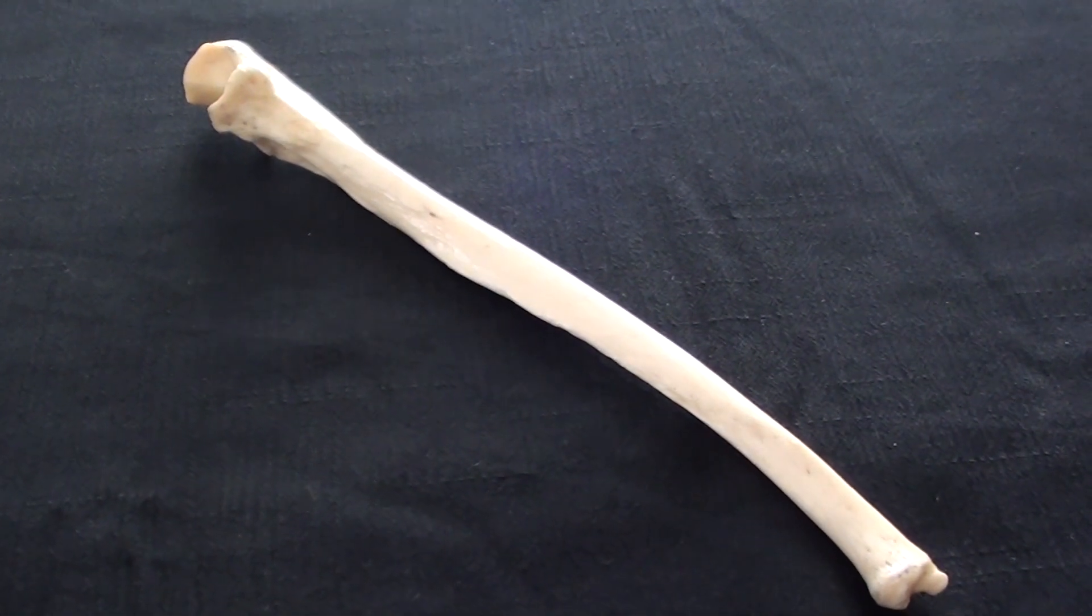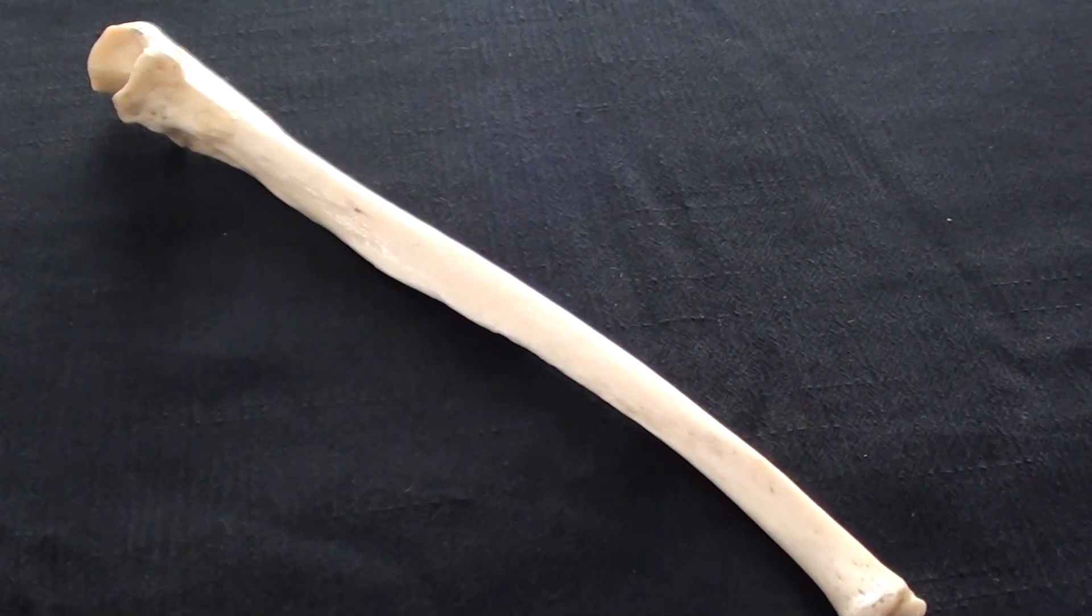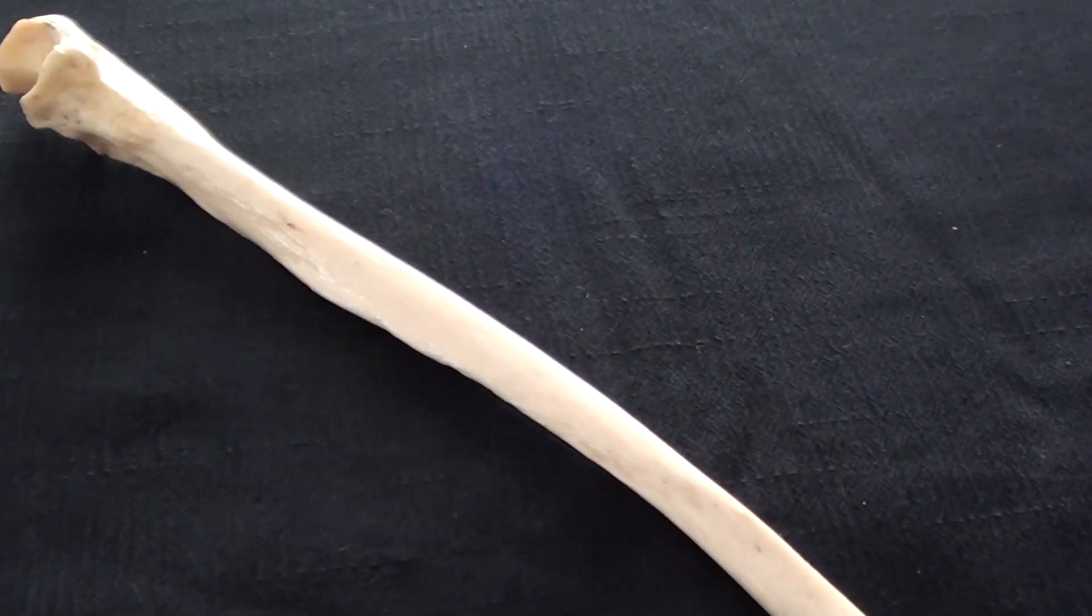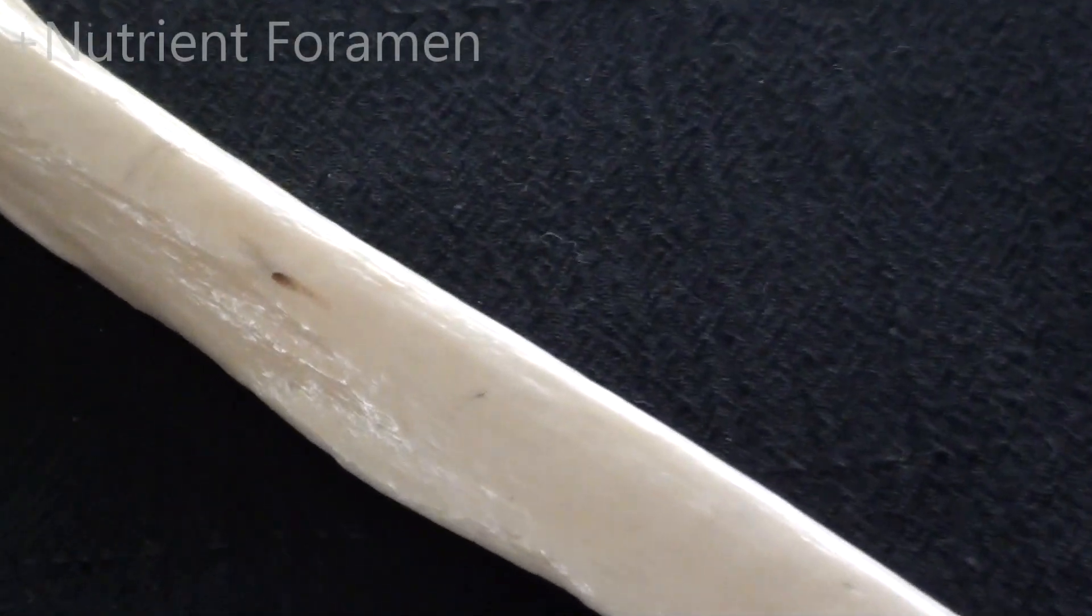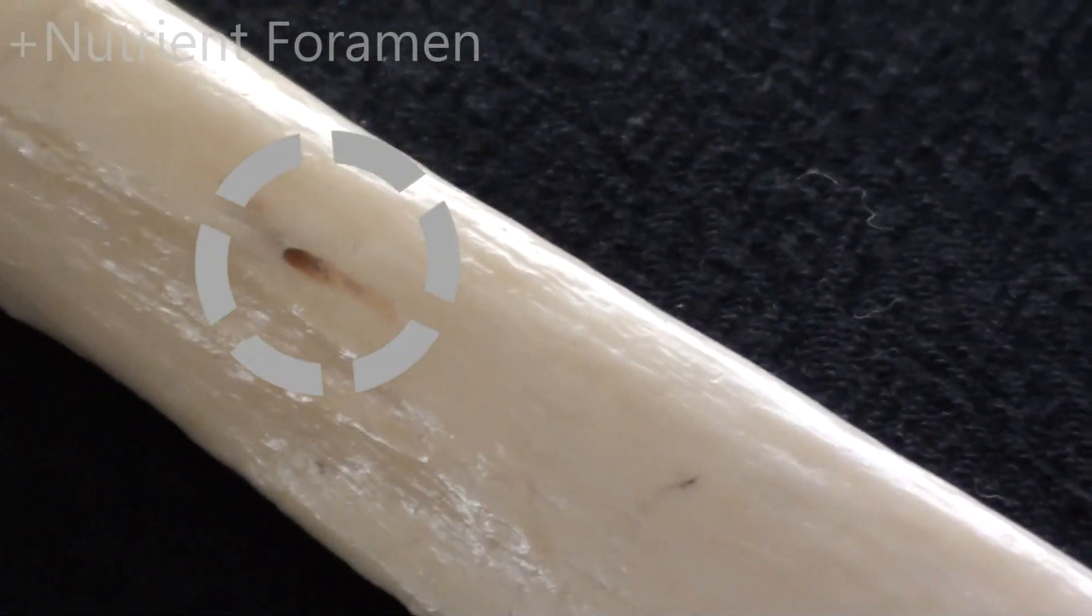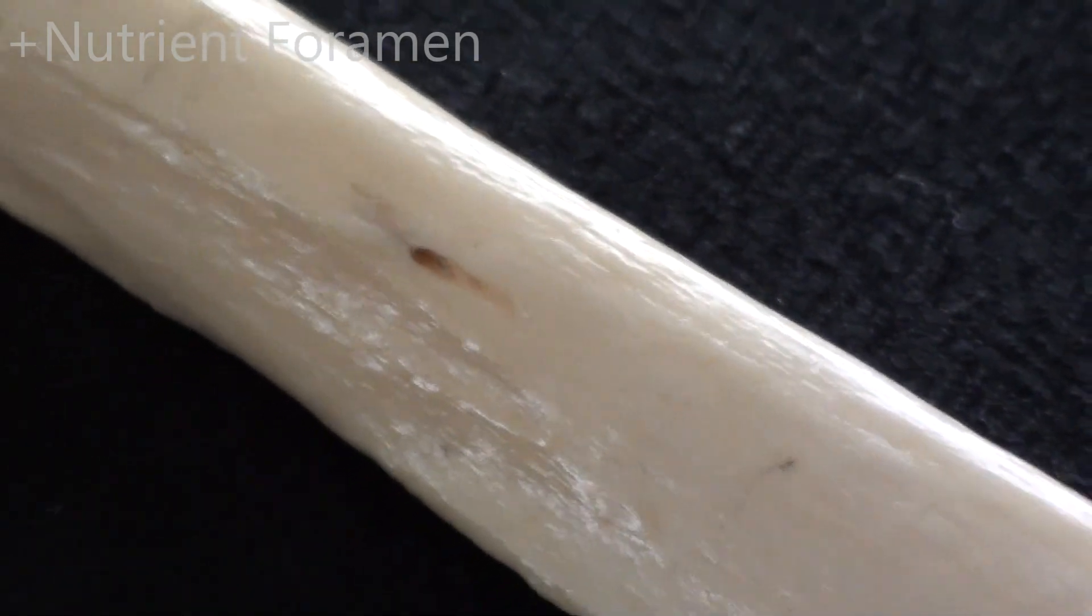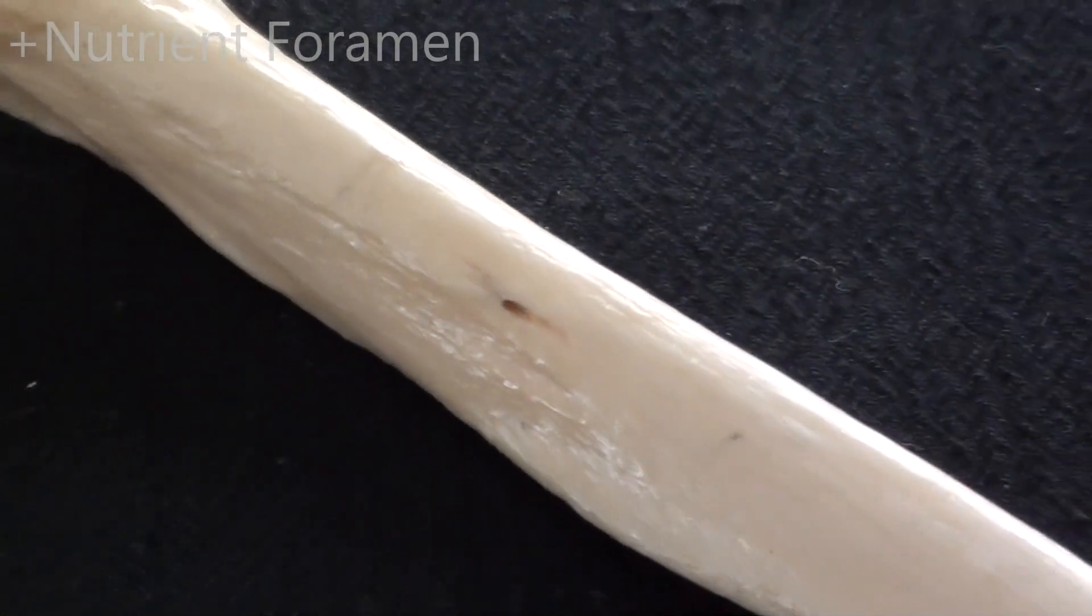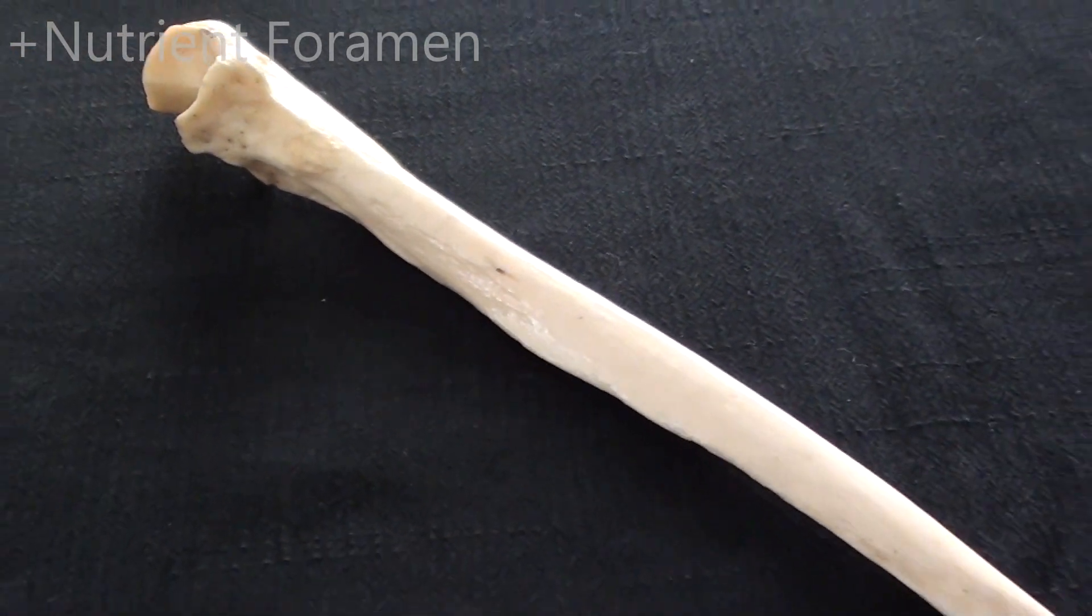Let's take a closer look now to the body or shaft of the ulna. Here on its anterior surface, one can see this little opening which is recognized as the nutrient foramen. Nutrient foramen served to allow a major blood vessel, while this bone was still in the process of formation, to pass into the cartilaginous model and to initiate the process of ossification.